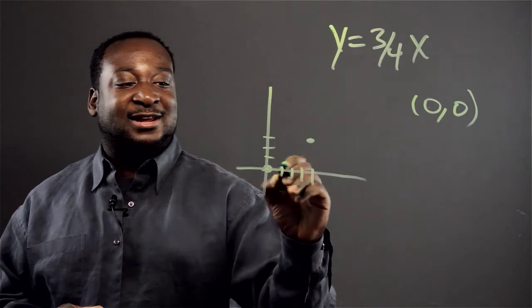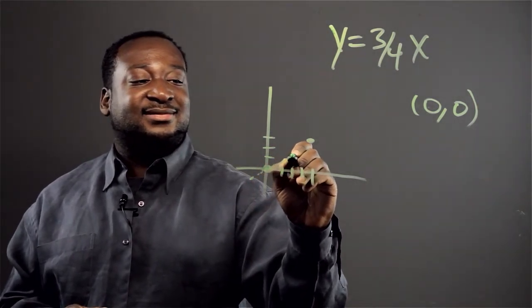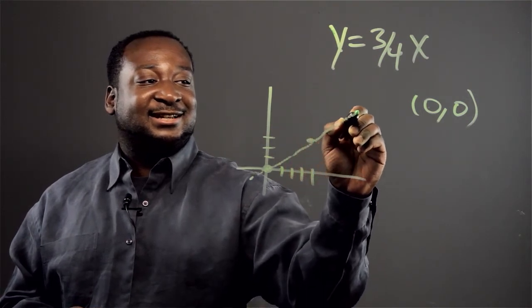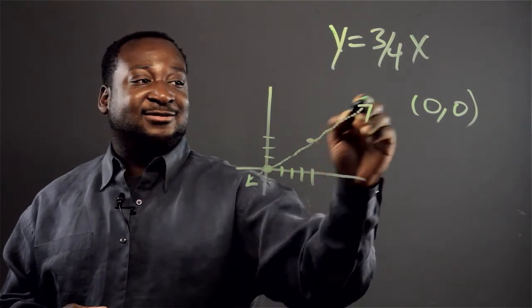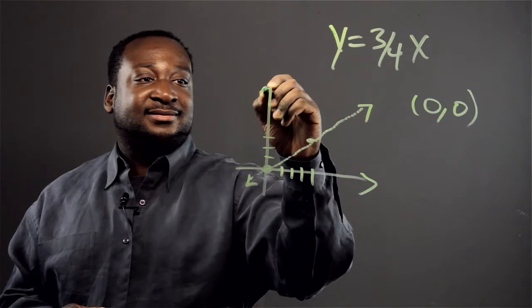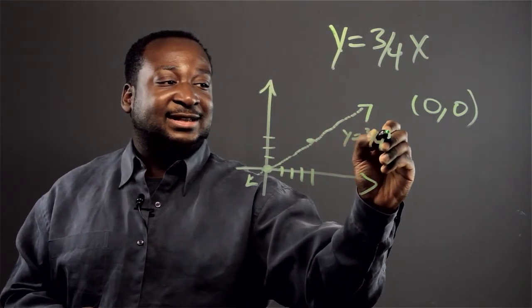And now we can draw a line. All I'm doing is connecting the dots. And there you have our line. And it goes all the way to infinity. And this is y equals three-fourths x.